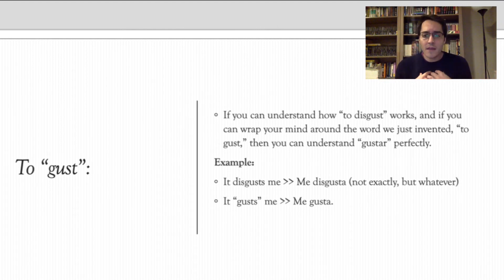Again, the me there is not the subject. I'm not the subject of this sentence, remember? The thing is the subject. I am the object. The thing causes a reaction in me. It disgusts me. The opposite being it gusts me. So when you're saying me gusta, you're not saying exactly I like. You're saying the thing gusts me. It causes something positive in me, which causes me to like it.